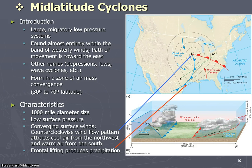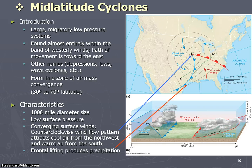Hi, Physical Geography students. In this video, we continue our review of Chapter 7 on Atmospheric Disturbances. Specifically, we're looking at mid-latitude cyclones, which are very important for our overall understanding of weather, particularly in the United States between 30 and 60 degrees latitude, where probably most of us taking this class reside.